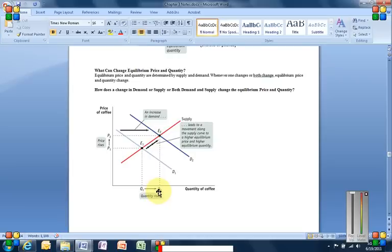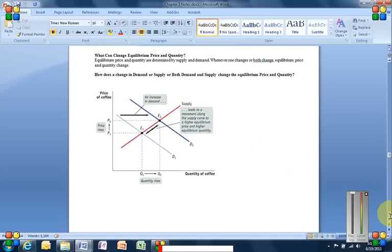So for this example, if demand shifts to the right, what happens to the price of coffee in the marketplace? It increases of course, and the quantity also increases. If something else happened that caused demand to shift to the left, then both of those things would decrease. The equilibrium price would decrease and the equilibrium quantity in the coffee market would also decrease.